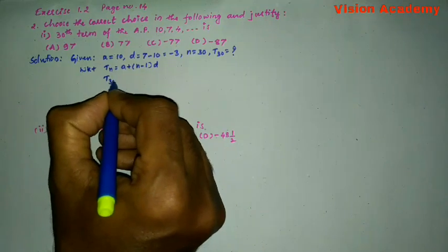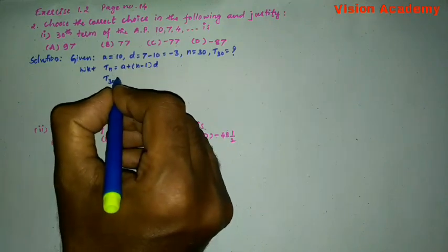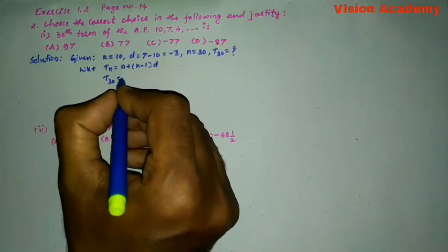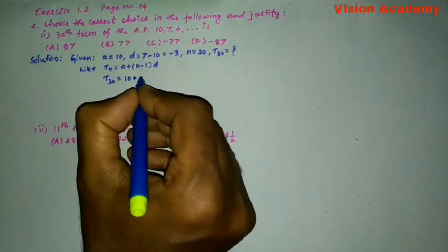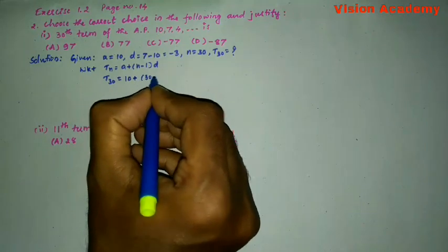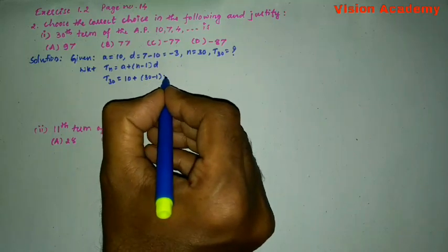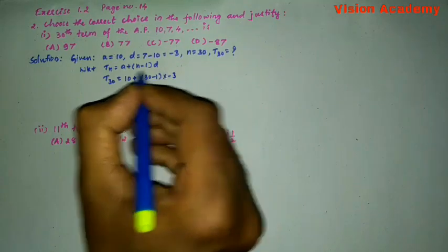We know that TN is equal to A plus N minus 1 times D. So here N is 30. Let us write T30 is equal to A is 10 plus N is 30 minus 1 into D is minus 3.